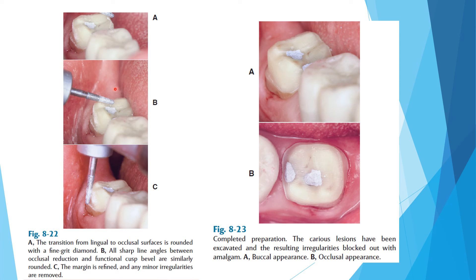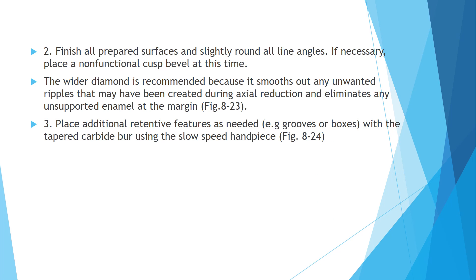Everything must be intact: contact has to be broken, the margin must be clear and at the correct location, and all irregularities must be removed. The crown preparation is complete — likely a carious tooth that was restored prior to crown preparation. All prepared surfaces are finished and all line angles are rounded off; a wider diamond is recommended for smoothing out unwanted ripples on the axial reduction, which also eliminates any unsupported enamel at the margin.